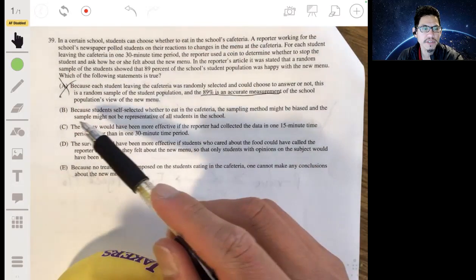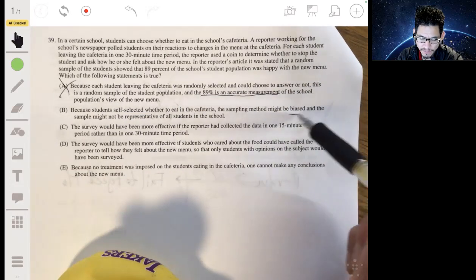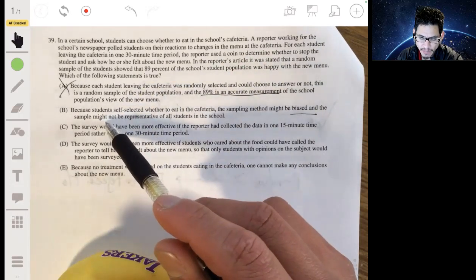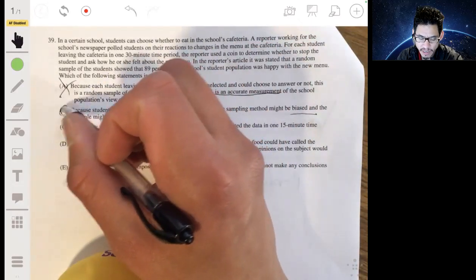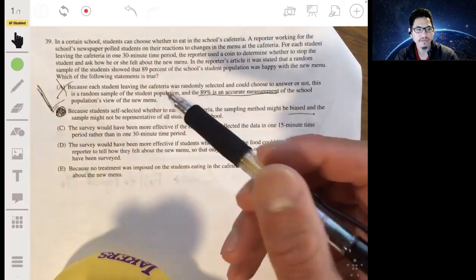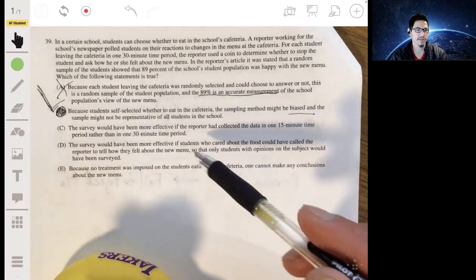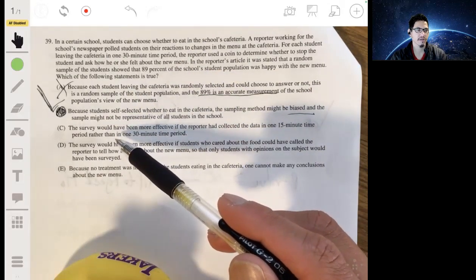Alright, B. Because students self-selected whether to eat in the cafeteria, the sampling method might be biased, okay, and the sample might not be representative of all students in the school. Yeah, so this is what I was getting at. Wow, you read my mind. It's like I wrote this problem. So B will be our answer, but let me just discuss briefly about the other ones and why they're not the correct answers.